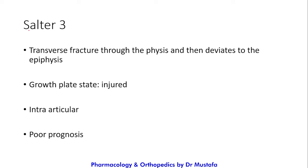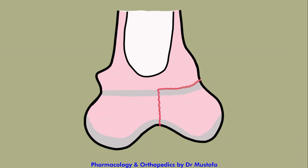Salter-Harris Grade 3 is a transverse fracture through the growth plate that then deviates to the epiphysis. Unlike Grade 2, which deviates to the metaphysis, Grade 3 deviates to the opposite side — the epiphysis. The growth plate is injured because it is crossed by the fracture. It is intra-articular and has a poor prognosis.